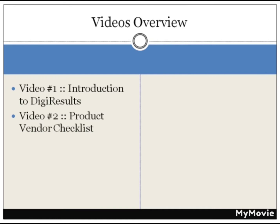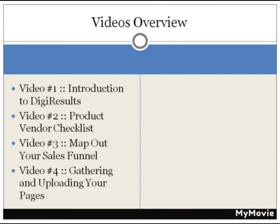Video number three: it's important to map out your sales funnel — for example, your front-end product, your one-time offer, your back-end product, and things like that. If you know exactly what your sales funnel is going to look like, then implementation is going to be a lot easier.